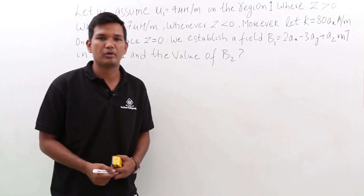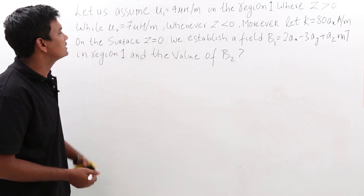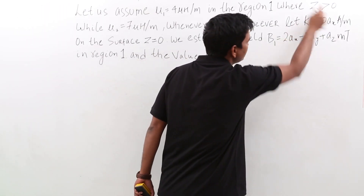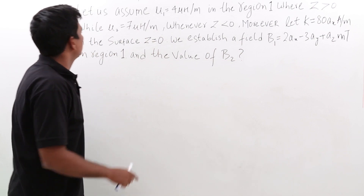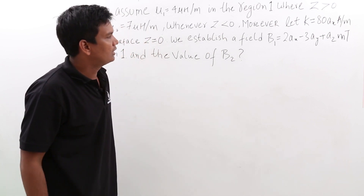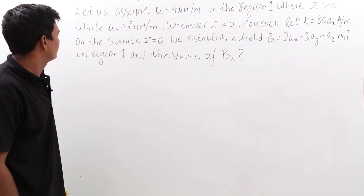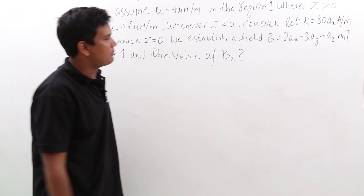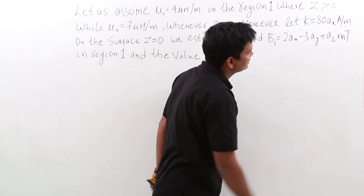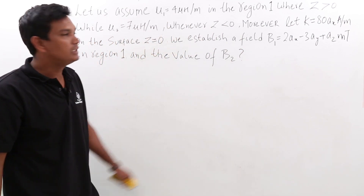In this class, we will try to solve a problem on magnetic boundary conditions. There is a region 1 of permeability mu 1 where z is greater than 0, and another region of permeability mu 2 where z is less than 0. A surface current is also given as K = 80 A_x. The magnetic field in region 1 is given by B1 = 2 A_x minus 3 A_y plus A_z, and we have to find the magnetic field in region 2.